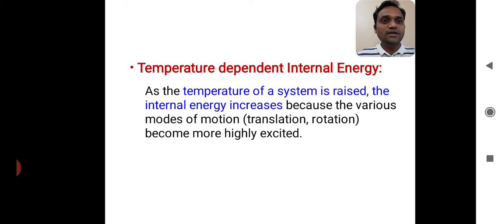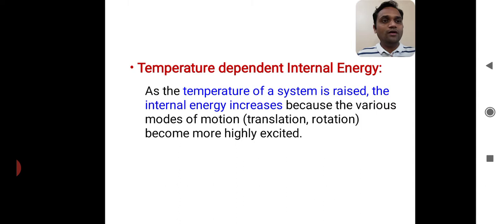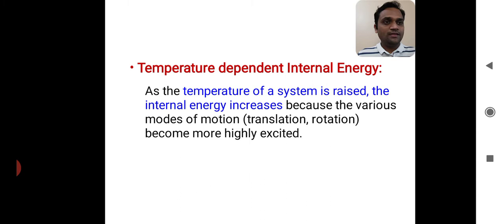Let us start with the point: temperature-dependent internal energy. Now what is the dependence of internal energy on temperature? As the temperature of a system is raised, the internal energy increases. Because the various modes of motion like translation and rotation become more highly excited. So when we increase the temperature, the various modes of motion become more highly excited and due to this, the internal energy also increases.